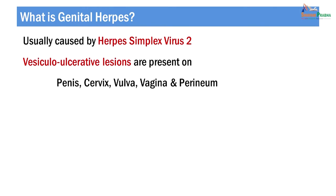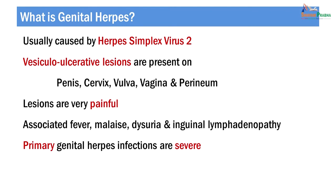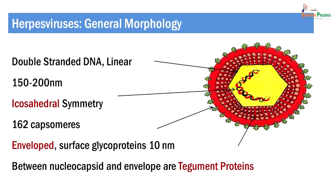Genital herpes is an infection caused by herpes simplex virus 2, rarely by herpes simplex virus 1. It is characterized by vesicular ulcerative lesions on the perineum and external genitalia. The lesions are usually very painful and associated with fever, malaise, dysuria, and inguinal lymphadenopathy. The lesions produced in primary genital herpes are usually severe, but when the infection is recurrent, the lesions tend to be mild. Herpes simplex virus 2 belongs to the family Herpesviridae. Let us now see the general morphological characters of herpes viruses.